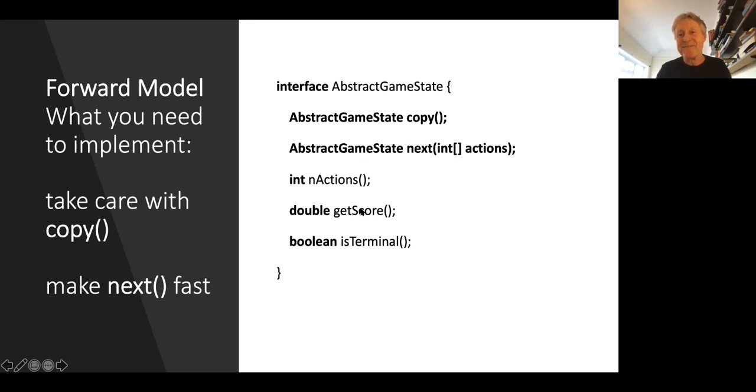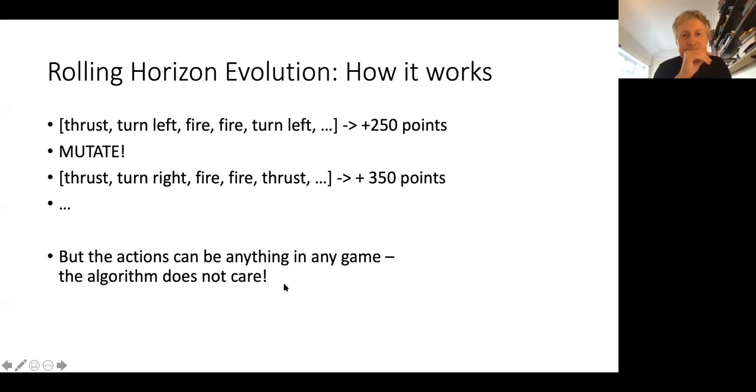For each copy, we've got to be able to call this next function to simulate the consequences of our actions. Things like the number of actions available, the score, is it terminal - they're pretty straightforward. You get those with any digital game. Just to mention that if you implement a game without taking any care, the copy and next - next, as a good programmer you want to make that fast anyway. But if you're not careful, the copy one you can come unstuck with.